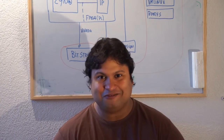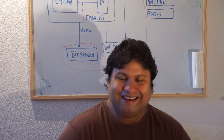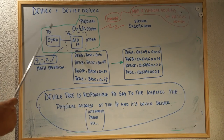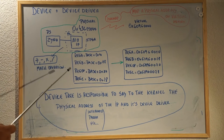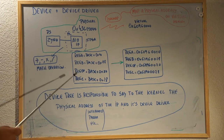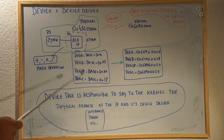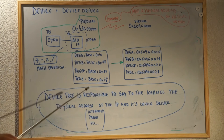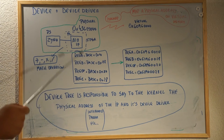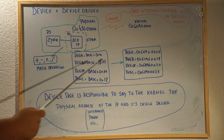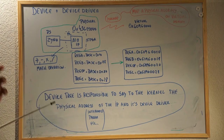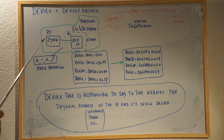Hope you guys enjoyed it. If you liked it give me a thumbs up and let's get started. Now that we are able to make the kernel detect our IP core, it's time to add the functionality that we had in the previous video — but now using the virtual address. Before that, let's take a look again at what we did so far.